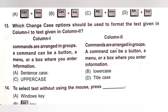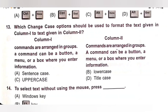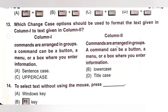Thirteenth question: Which Change Case option should be used to format the text given in column 1 to text given in column 2? Column 1 has all small letters and column 2 has sentences beginning with a capital letter. Options: A. Sentence case. B. Lower case. C. Upper case. D. Title case. We use the Sentence Case option. Option A is the correct answer.